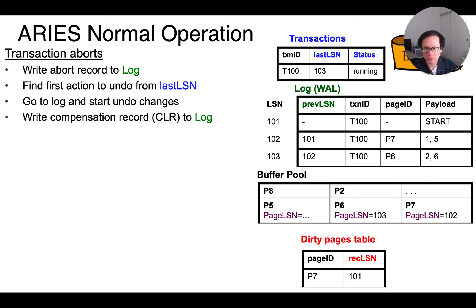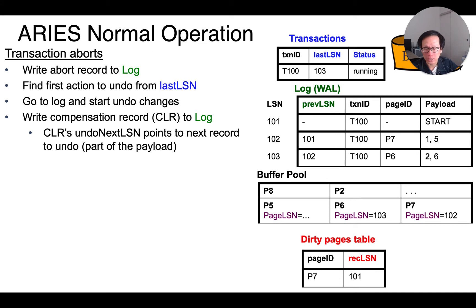When the action has been undone, we write what is known as a compensation log record, or CLR, to the log. The compensation record tells us that we have already undone the action, so we don't want to undo it again. We need a way to identify which action was undone. To do that, we store a field called the undo-next-lsn with each CLR, which points to the next log record to undo, if there's one.